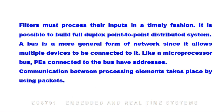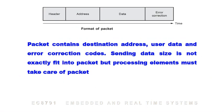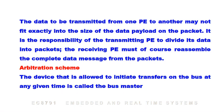A bus is a more general form of network since it allows multiple devices to be connected to it. Like a microprocessor bus, processing elements connected to the bus have addresses. Communication between processing elements takes place using packets, which contain a header, address, data, and error correction fields. Packets contain the destination address, user data, and error correction codes. The data to be transmitted may not fit exactly into the packet payload, so the transmitting PE divides its data into packets, and the receiving PE reassembles the complete data message from the packets.